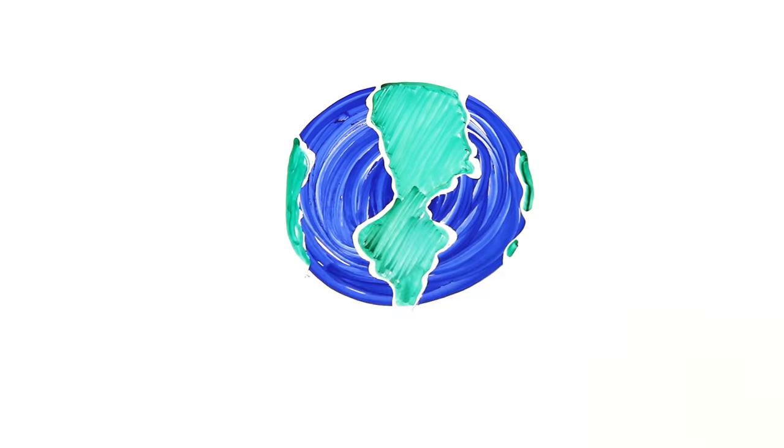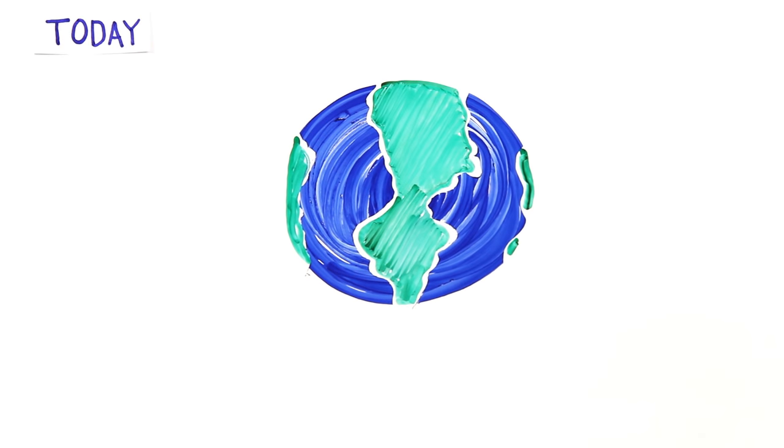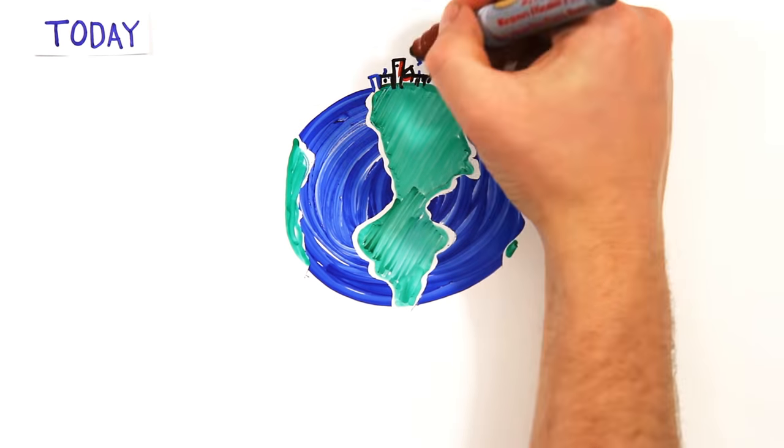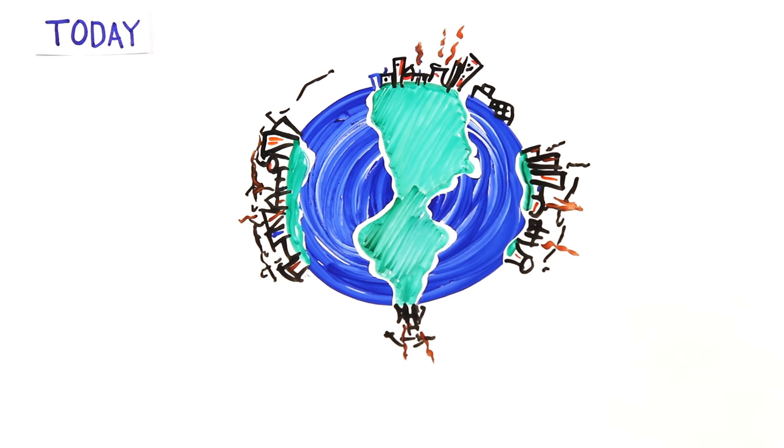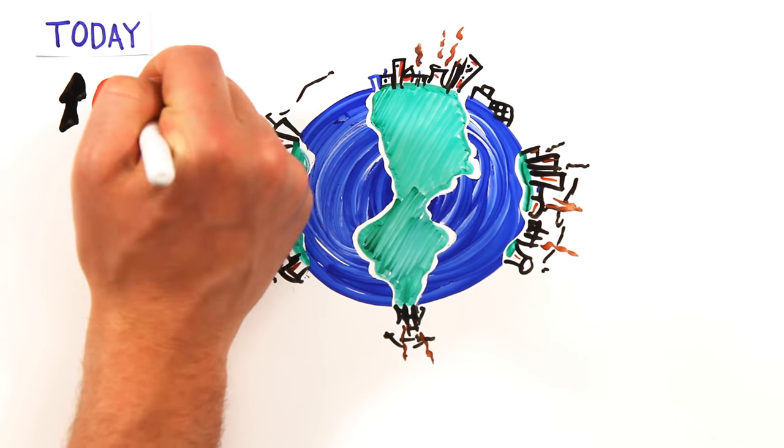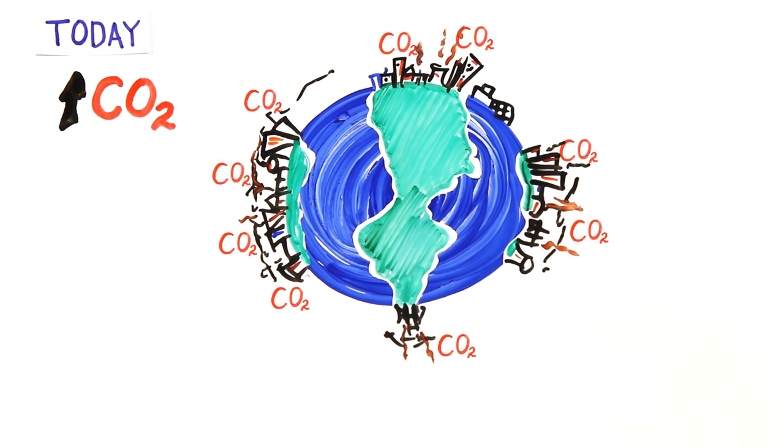So where does that leave us now, 65 million years later? Human dominance of Earth has led to big changes too, except the changes of today are happening over decades, not millennia. Carbon dioxide levels, implicated in so many of the past extinctions, have climbed at least 25% in just the last 50 years, almost no time in geological terms.